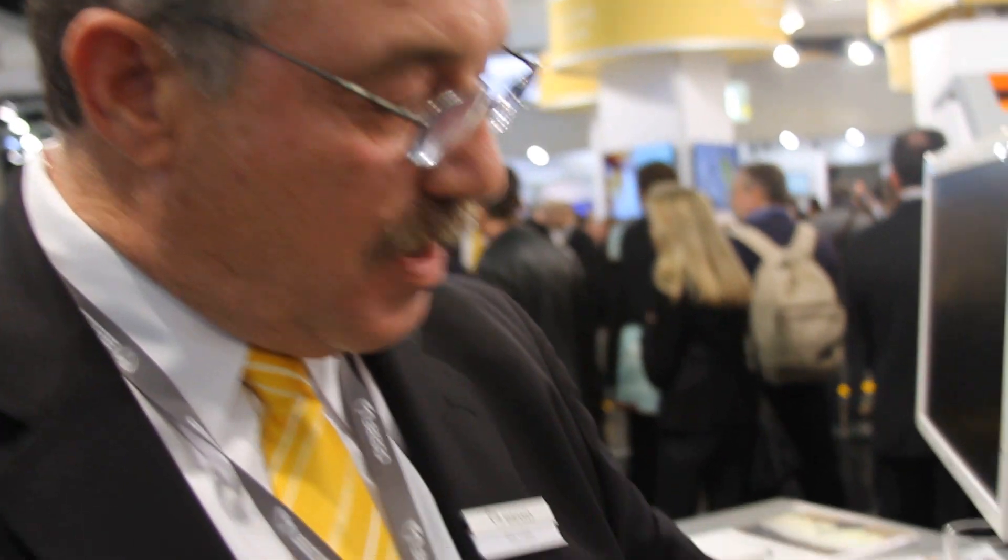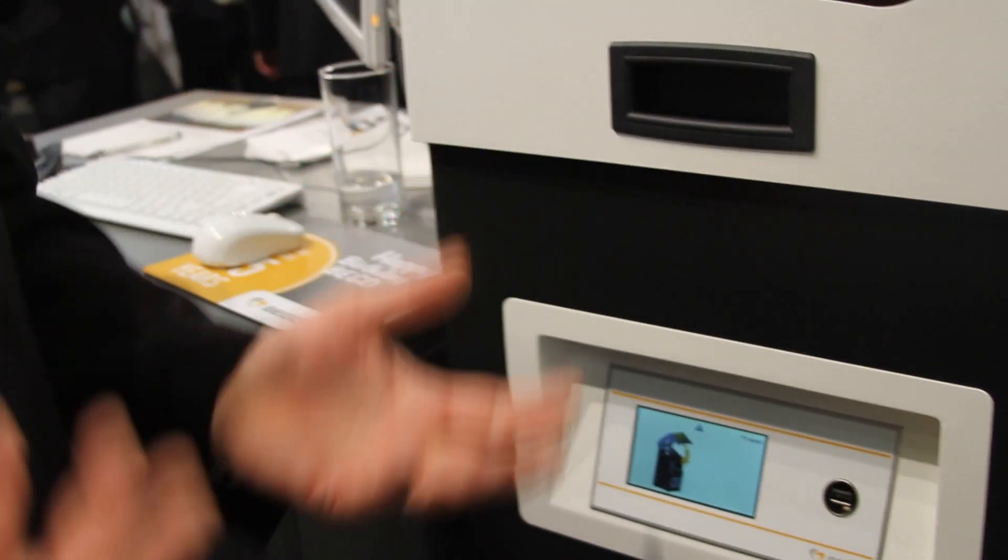Once everything is loaded into place, you just hit the start button. It reads the application and starts printing. The print resolution is from 50 microns up to 100 microns. It's 22 millimeters of print per hour, so you do your calculations on the height. You can do a vertical print as well as a horizontal print.